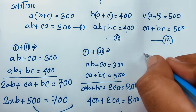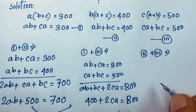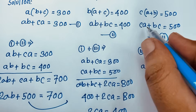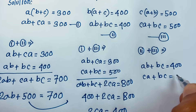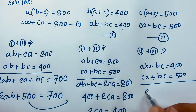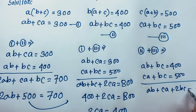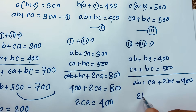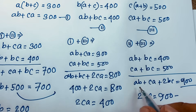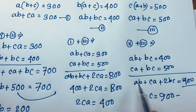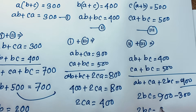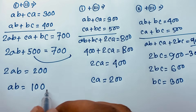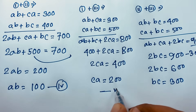Now I add the second and third equations. Second: ab + bc = 400, third: ca + bc = 500. Adding gives ab + ca + 2bc = 900. Since ab + ca = 300, we get 2bc = 600, so bc = 300. This is our sixth equation. So we now have: ab = 100, ca = 200, bc = 300.